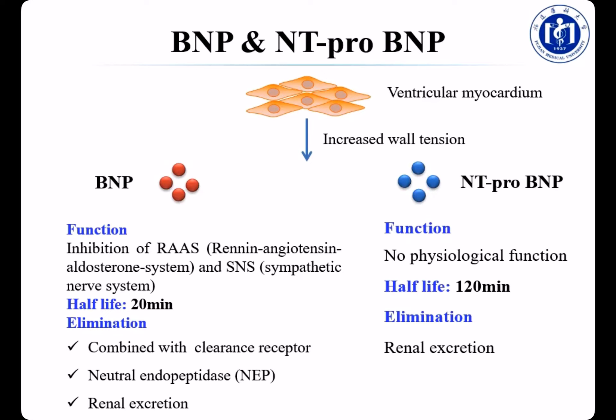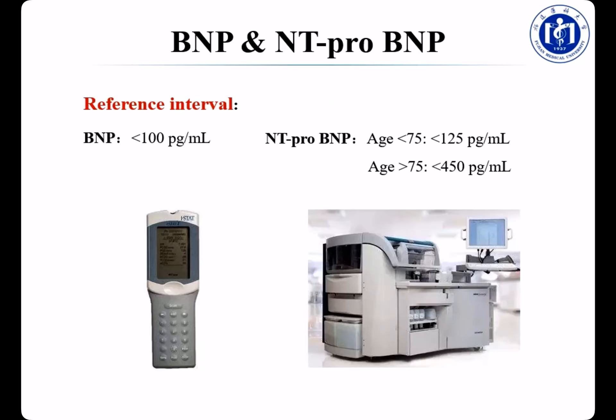NT-proBNP can only be eliminated by renal excretion. So here comes the question: for a patient with both heart failure and renal failure, which marker is better — BNP or NT-proBNP? The answer is BNP, because NT-proBNP can only be eliminated by renal excretion, so its level will significantly increase in renal failure patients. BNP, however, can be eliminated by the other two pathways besides renal excretion.